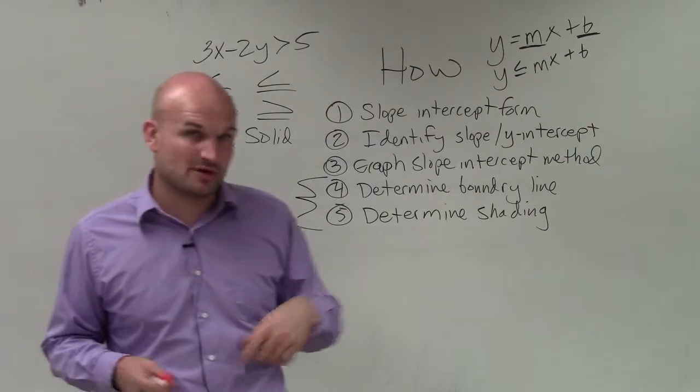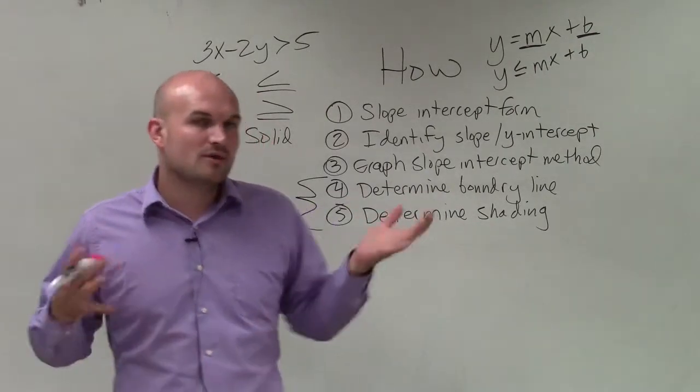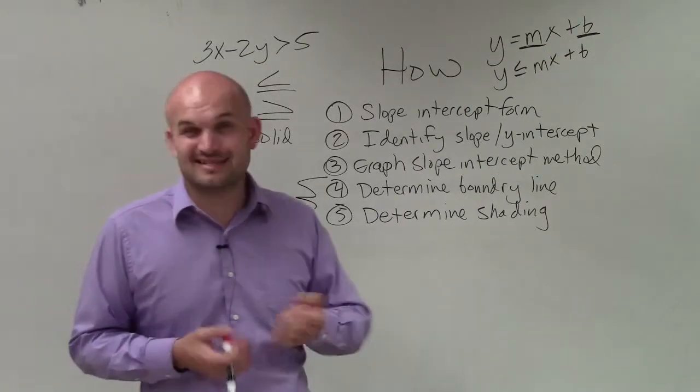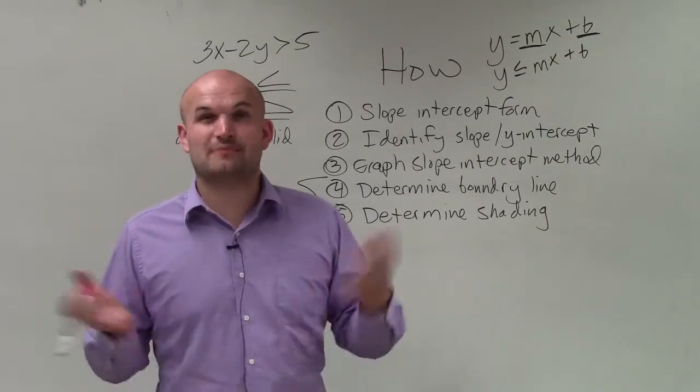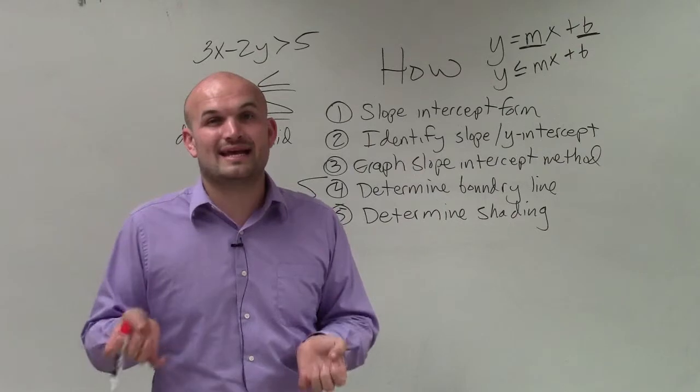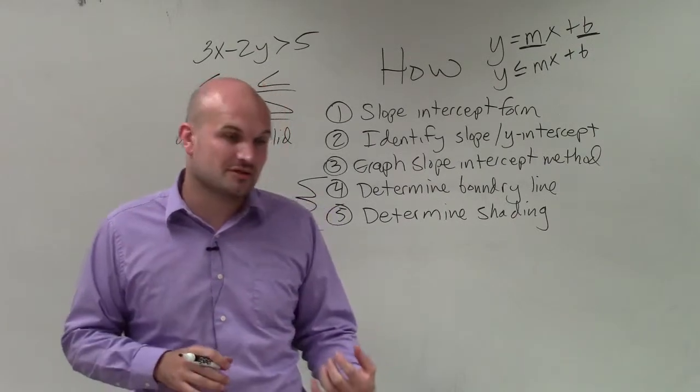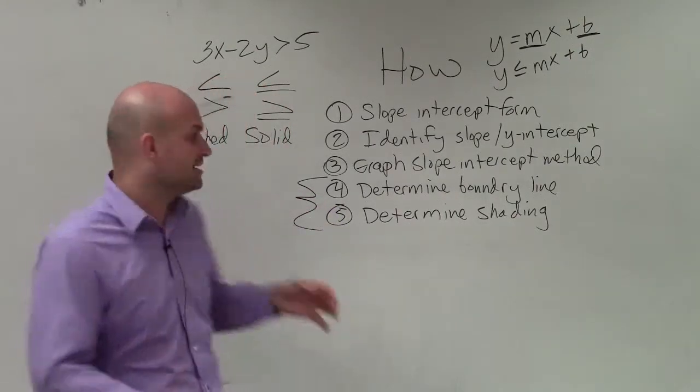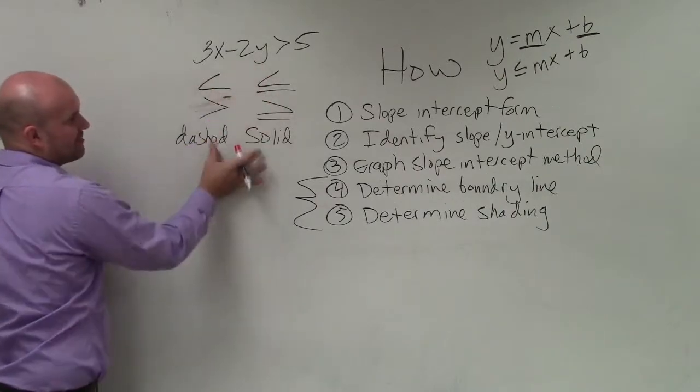what we're going to do is choose a test point either above or below the line. The best point to always pick is going to be (0, 0). And it doesn't matter if (0, 0) is above or below the line. We just don't want to pick (0, 0) when it falls on the boundary line, because then we're testing the boundary line, which we can easily determine.